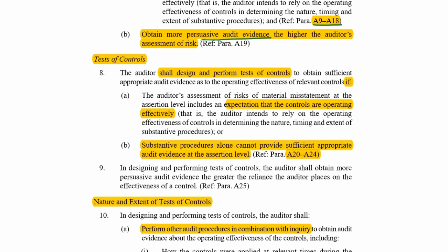Tests of controls can only be performed if there is an expectation that the controls are going to operate effectively, or if substantive procedures alone cannot provide sufficient appropriate audit evidence. As discussed when looking at ISA 315, this applies where there is a computer information system and no ability to access and test substantively, or where there is a lack of an audit trail so you can't test substantively.